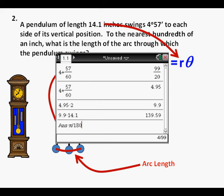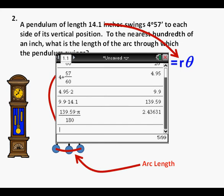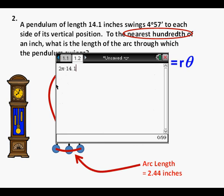That can be done by multiplying by pi over 180, as shown here on the calculator. When we press enter we get 2.43631, as in 2.43631 inches. Following the instructions to answer to the nearest hundredth of an inch, our answer is an arc length of 2.44 inches, which we box in as our correct answer.